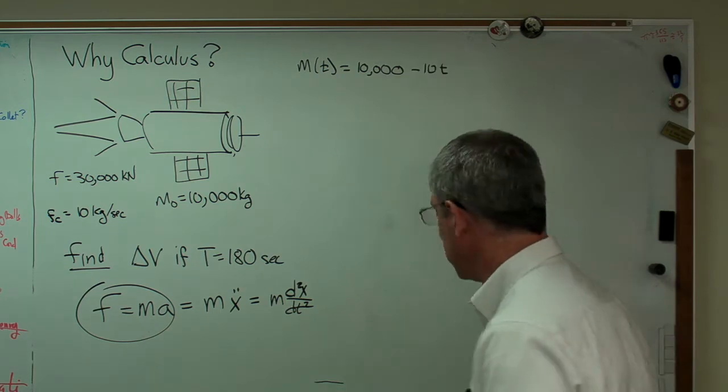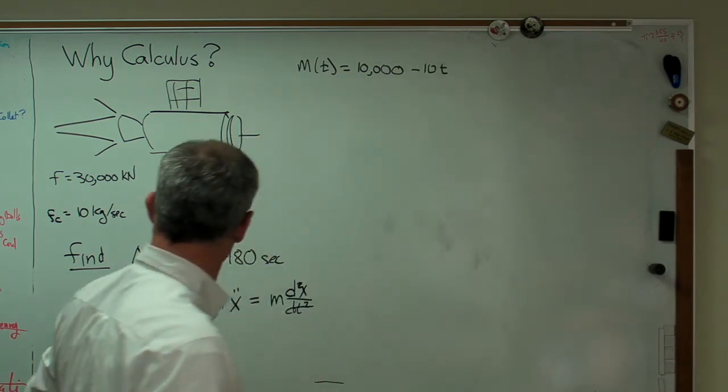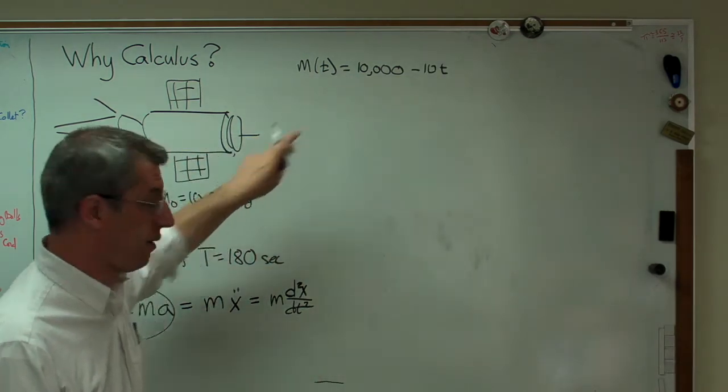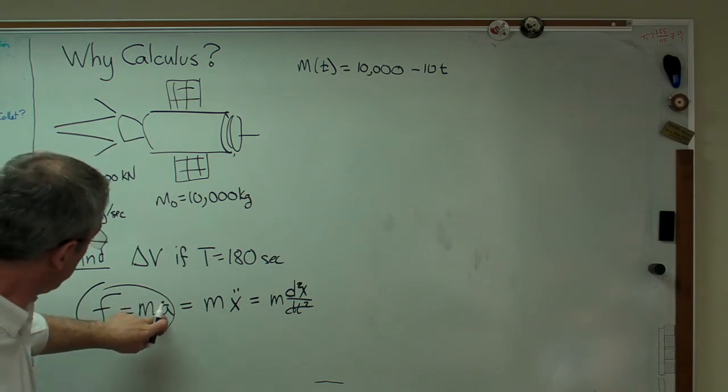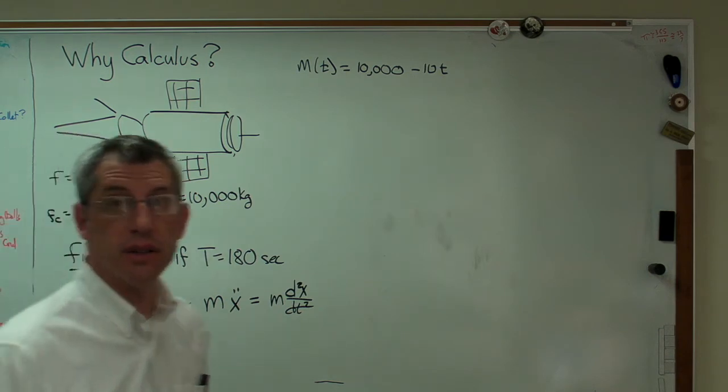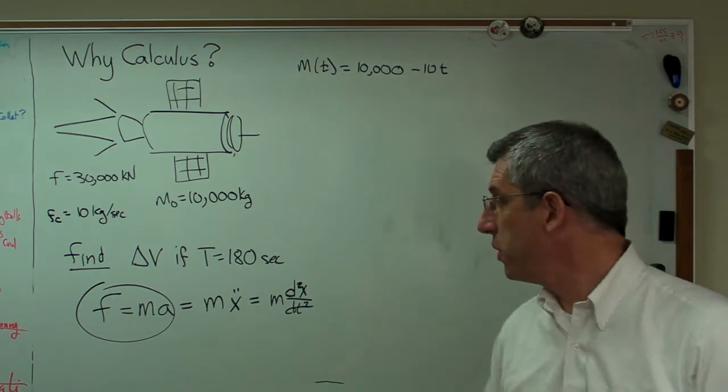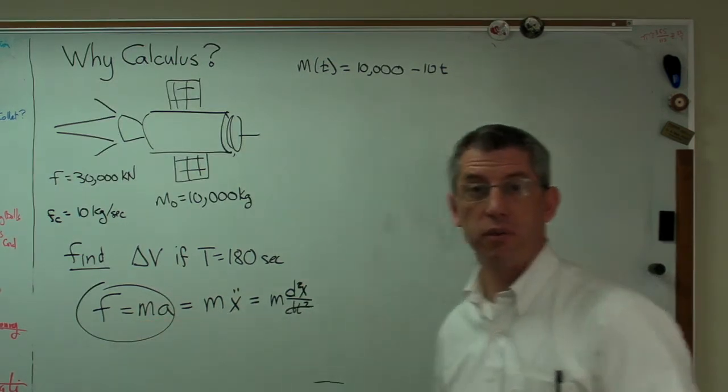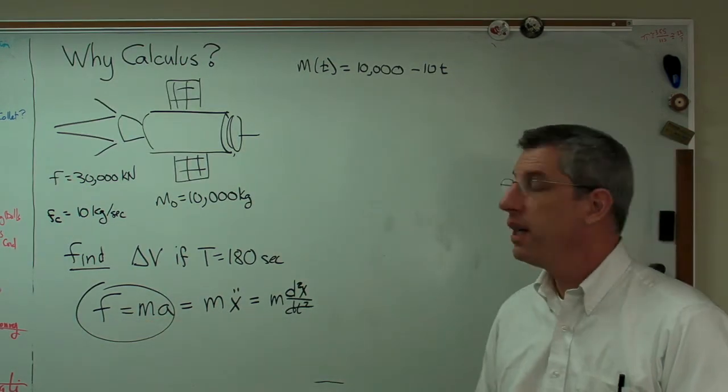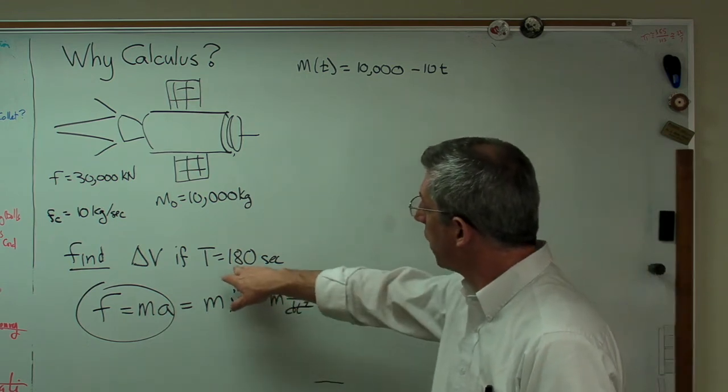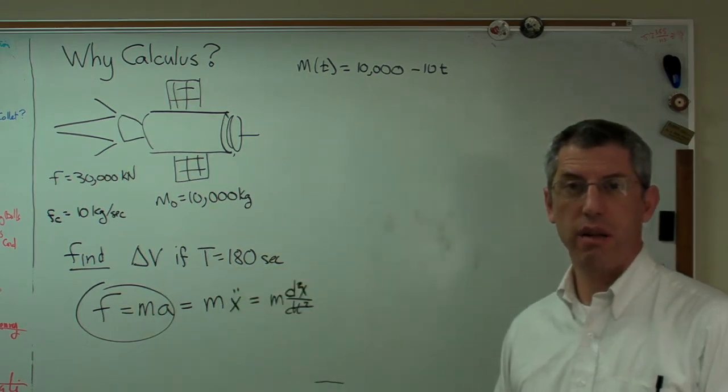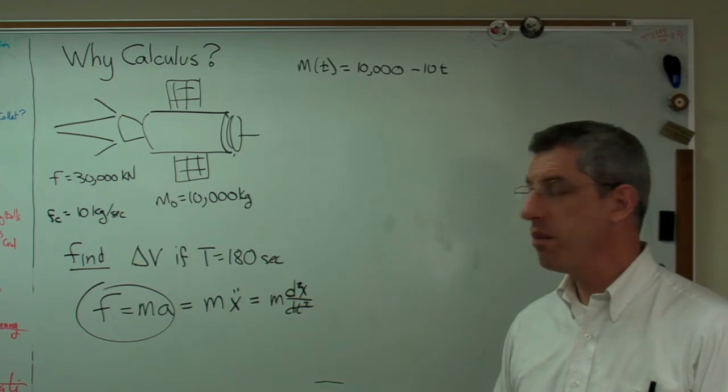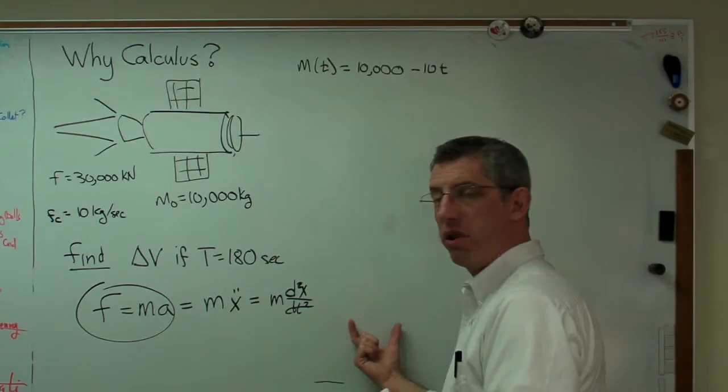Now how do you plug that into here? This assumes a is constant and m is constant, right? There's no calculus explicitly written in there. Well you could do things like, if I'm going to burn for 180 seconds, maybe I could break that time span into a bunch of little pieces and assume m is constant over the pieces and take a stab at it that way.